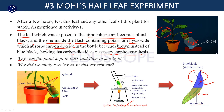Here are two questions. First: why was the plant kept in dark and then in sunlight? — To de-starch it. Second: why did we use two leaves in the experiment? — We took a normal leaf as well just for comparison. The leaf completely in the atmospheric air becomes bluish black, to compare with the leaf that had no CO2. So we have taken two leaves for the test.